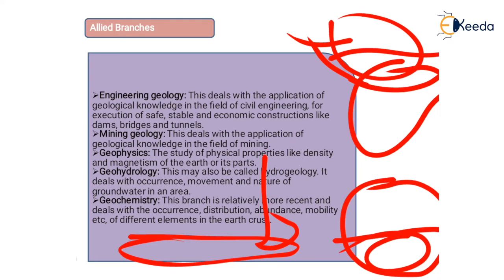Geochemistry is a relatively recent branch that deals with the occurrence, distribution, abundance, and mobility of different elements in the Earth's crust. It deals with the chemistry of different economically important elements like silica and other elements present in the Earth's crust. The study of these elements is called Geochemistry.